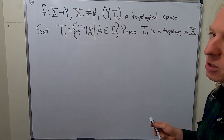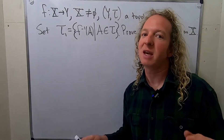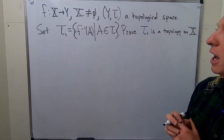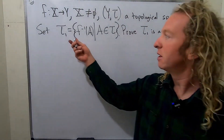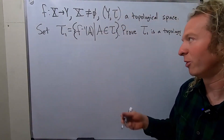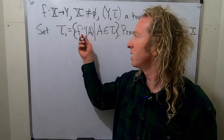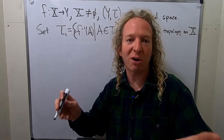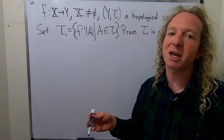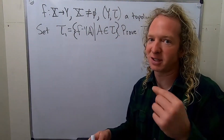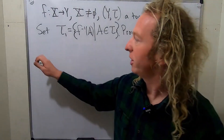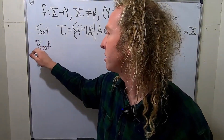To be a topology, there are basically three conditions. The entire space and the empty set have to be in tau 1. Whenever you take any union of elements in tau 1, it also has to be an element in tau 1. And whenever you take any finite number of elements in tau 1, the intersection also has to be an element of tau 1. Let's go through each condition one at a time.